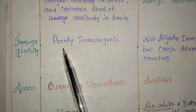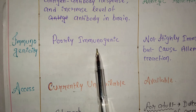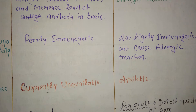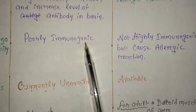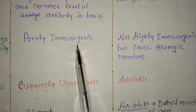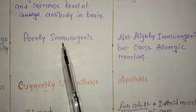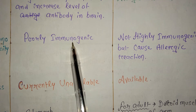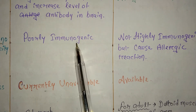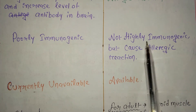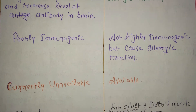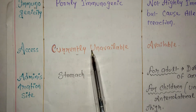Next point is immunogenicity — meaning the immune or antigen-antibody response. Neural vaccines are poorly immunogenic in a protective sense — they cause harmful immune responses rather than high protective immunity. Non-neural vaccines do not harm the body as severely, though they can cause allergic reactions.